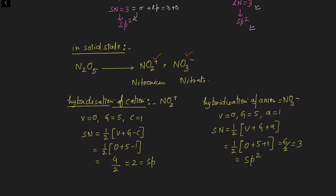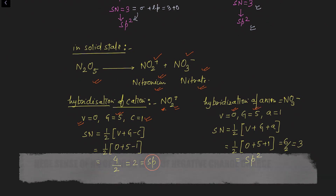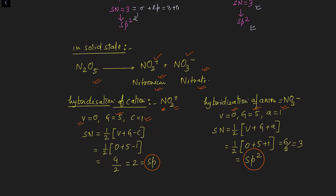In solid state, N2O5 ionizes into two different ion types: NO2+ (nitronium) and NO3− (nitrate), collectively called nitronium nitrate. For nitrogen in NO2+: oxygen is divalent so monovalent atoms = 0, valence electrons of nitrogen = 5, cation charge = 1, giving sp hybridization. For NO3−: same conditions give sp2 hybridization.